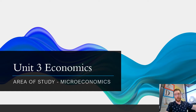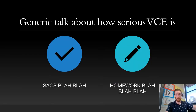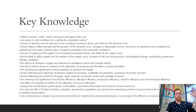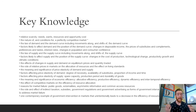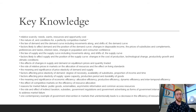For each of these things we're going to cover the key knowledge. As you can see with Area Study 1, it's a pretty big topic. The SAC is worth 40% of your Unit 3 score, so there's a lot that you need to know. We're going to break this down to about eight lessons of content. What we're going to be talking about today is just this first dot point: relative scarcity, needs and wants, resources, and opportunity cost.